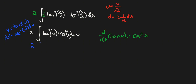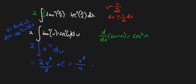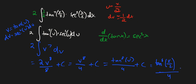So this is just 2 times the integral of v to the 7th dv, which equals 2 · (v⁸/8) + c, which simplifies to v⁸/4 + c. Since v is tan(u), this is tan⁸(u)/4 + c. We want the answer in terms of x, so this equals tan⁸(x/2) / 4 + c. That's your answer.